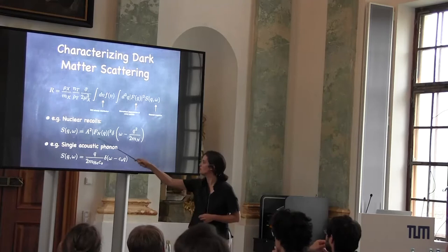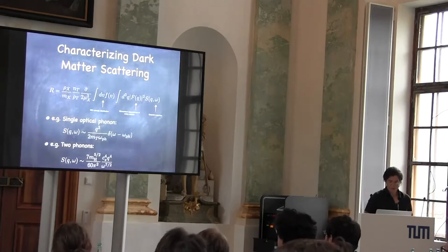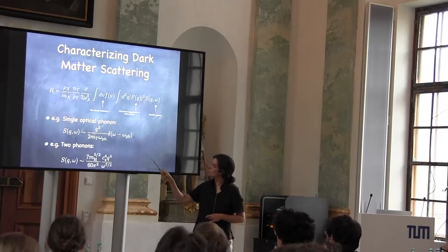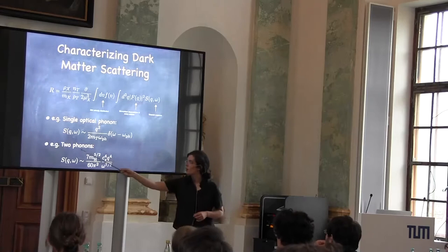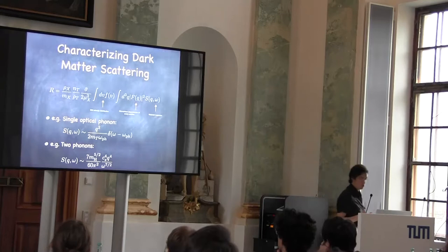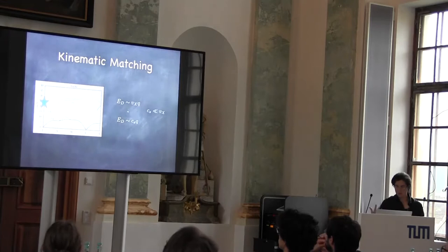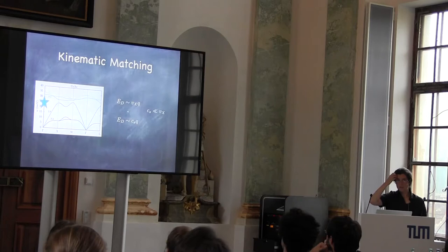Let me show you pictorially what's going on, to help understand what makes a good candidate material for dark matter detection. Here's the dispersion — momentum transfer is on the x-axis, energy deposition on the y-axis. Dark matter with mass below 1 MeV very naturally lives on the y-axis — at very low momentum transfer. A typical energy deposition goes like the momentum the dark matter carries times its velocity, whereas acoustic phonon modes have dispersion going like the speed of sound.